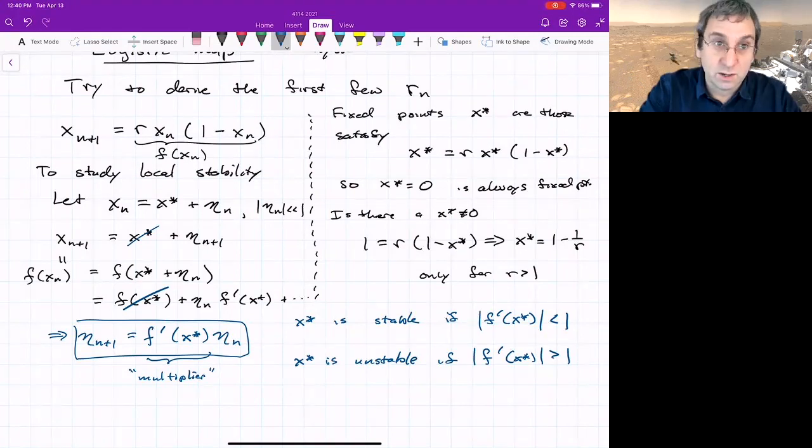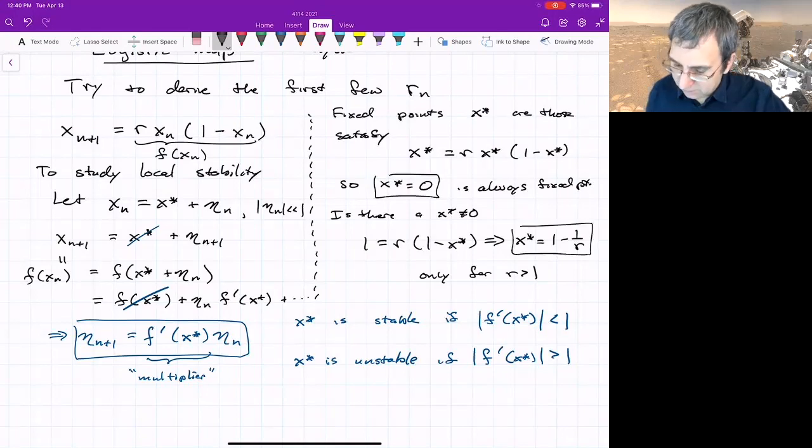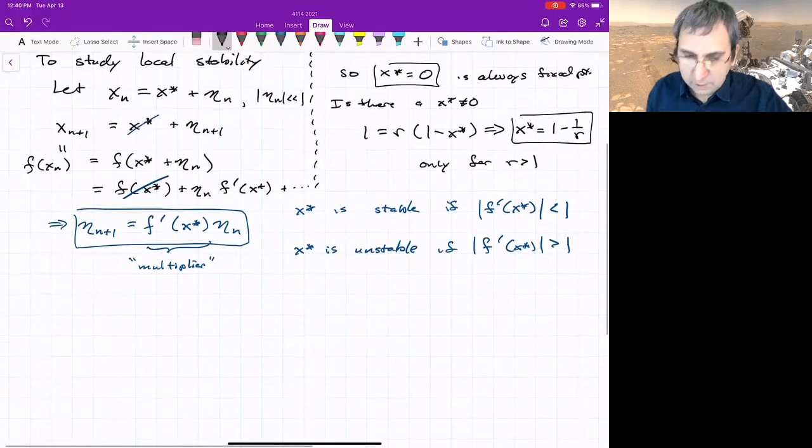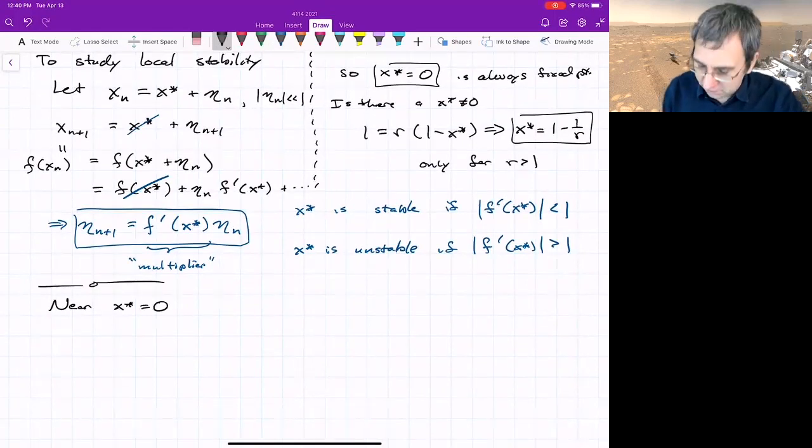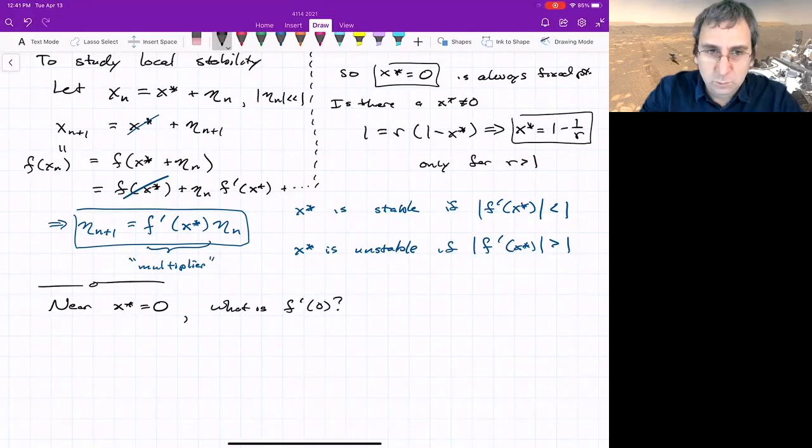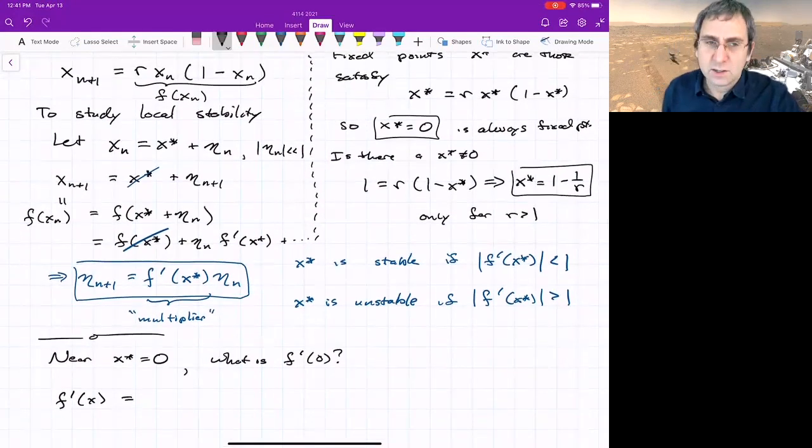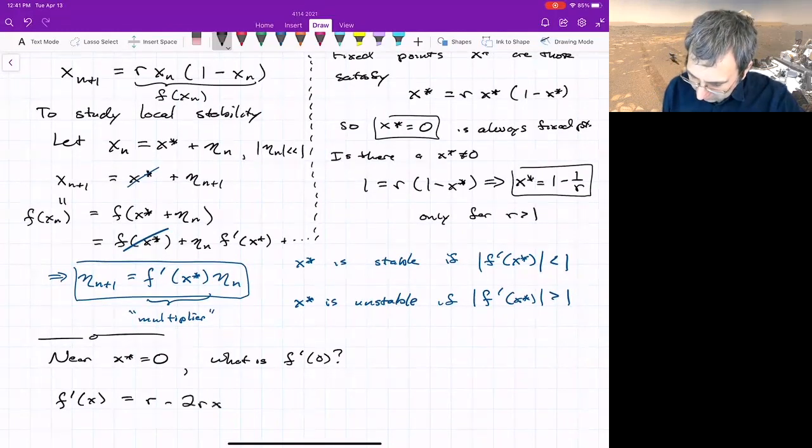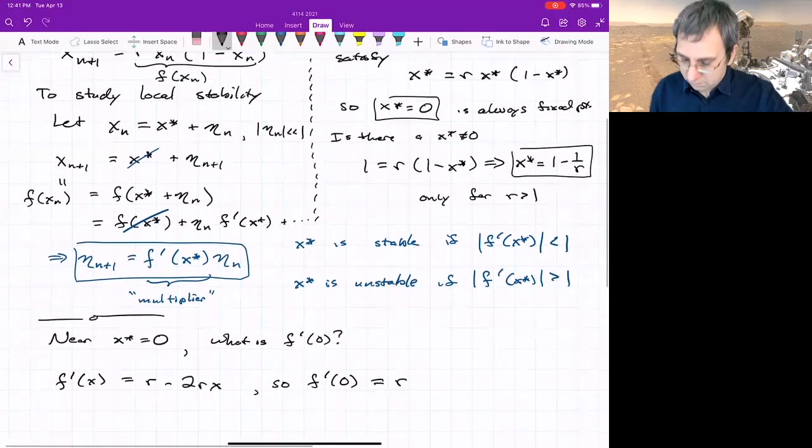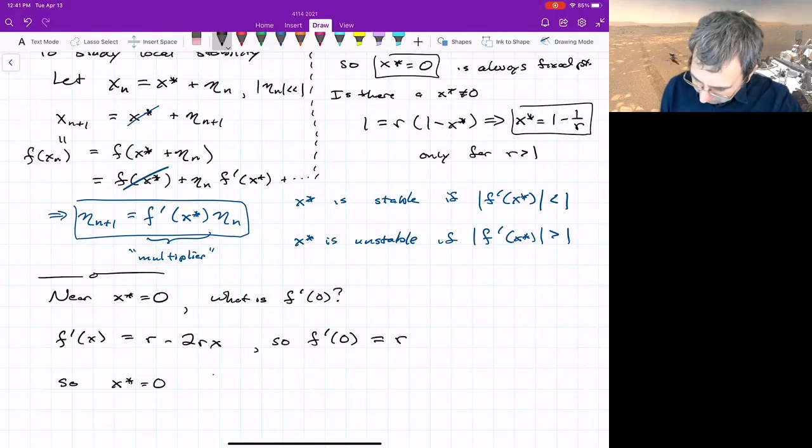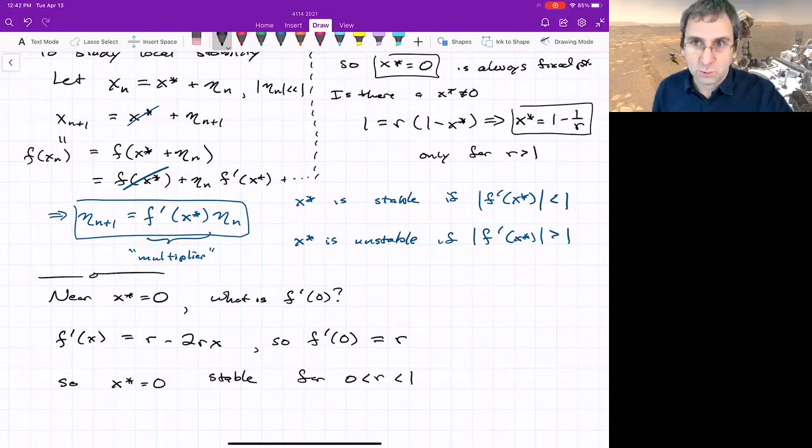Let's analyze the fixed point. For the fixed point zero, near x*=0, we have to look at what f' is. We can calculate f'(x) for any x. How have we defined f? This is r - 2rx. So f'(0), the slope of the curve at zero, is r.